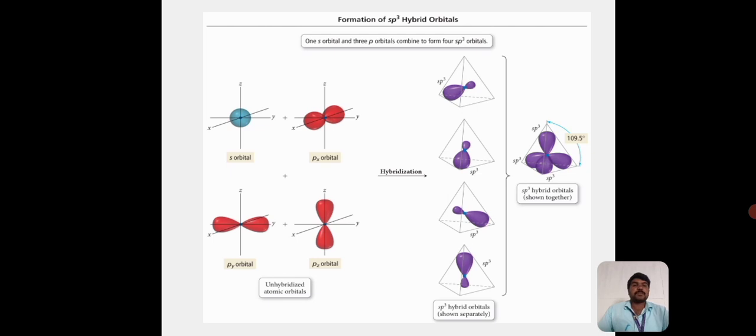These are the formation of sp³ hybrid orbitals. Here, the s orbital is combined with the three p orbitals to form the sp³ hybridization.